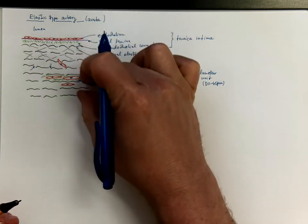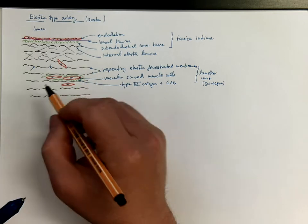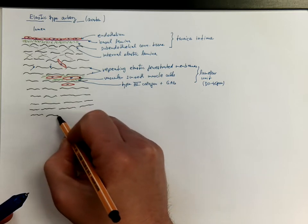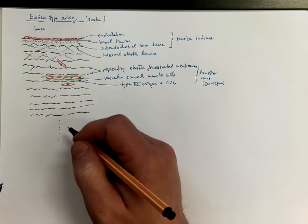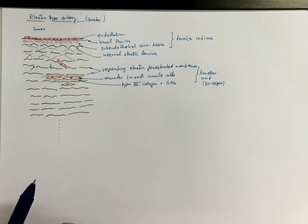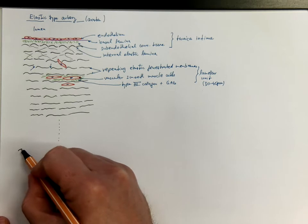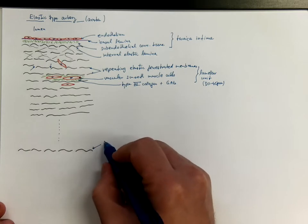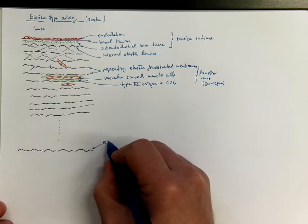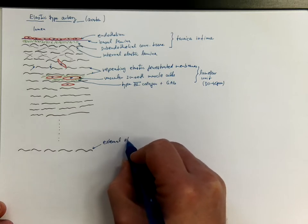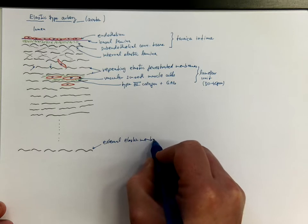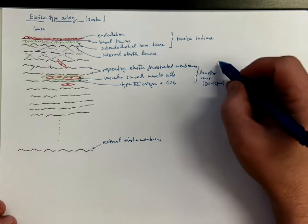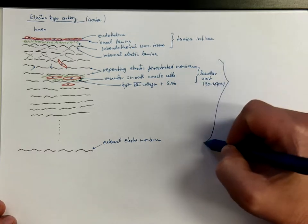And this repeats again and again many times. In the human aorta of an adult individual this may repeat like 30 times, again and again, until we come to the last regular elastic membrane, which is also called the external elastic membrane. And then we got the next layer, but this one it was the tunica media.